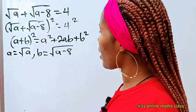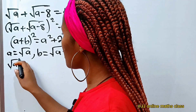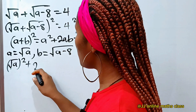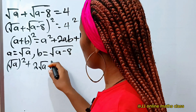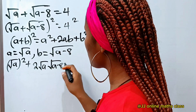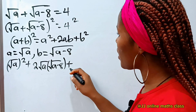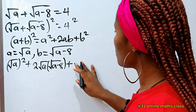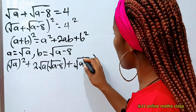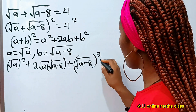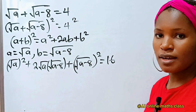So that means we are going to have: root a squared, plus 2ab — that is 2 multiplied by root a, multiplied by root of a minus 8 — plus b squared, that is plus root of a minus 8, all squared. And this is equal to 16 because 4 squared is 16.